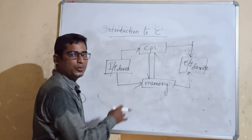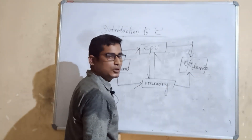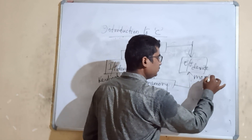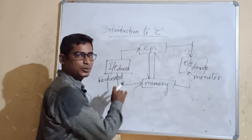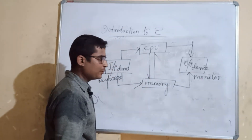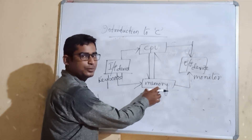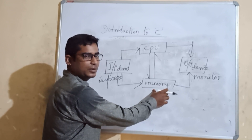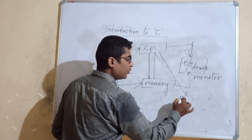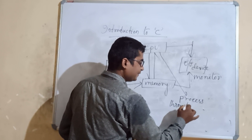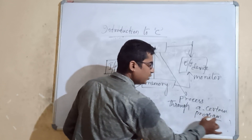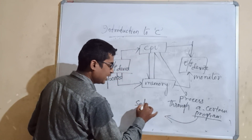Input is provided through an input device — for example, a keyboard. The computer processes the input through the CPU and sends the result to an output device, such as a monitor. The CPU processes data and can save results to memory. A program is a set of instructions that directs this process.